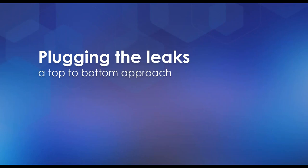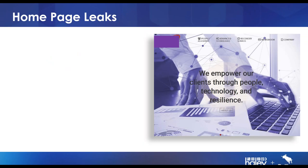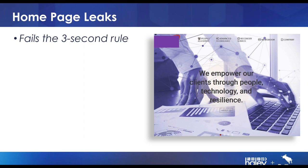Let's talk about a top-to-bottom approach, starting on the home page. I have a picture of a website — name hidden to protect the guilty — that is a good example of home page leaks. It fails the three-second rule: in three seconds of looking at this site I don't know what this company does, what they're all about, why I'd want to work with them, or even who the site is for. It says 'we empower our clients through people, technology and resilience' — if I didn't already know it was a staffing firm, that sentence means nothing to me.